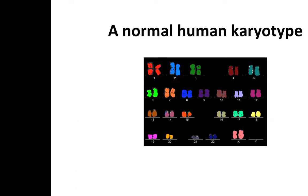How many people know what this is? It's generated by metaphase spreads and chromosomal painting techniques called spectrocarograms. What this is showing is essentially the organization of how DNA is organized in the cell in 23 pairs of chromosomes.